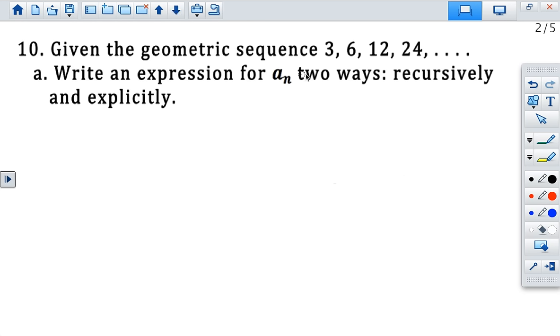You have the geometric sequence 3, 6, 12, and 24. And all we need to do is write the formula recursively and explicitly. Well, before we do that, we need to figure out what our first term is. Our first term is 3, and we need to figure out what our common ratio is. I know it's a common ratio because they tell us it's a geometric sequence right here. So with the ratios, you take the second term divided by the first term. And in this case, we could do 6 divided by 3 or 12 divided by 6 or 24 divided by 12. Either way, we're going to get a 2 for our common ratio.